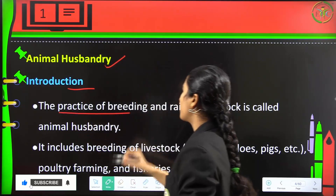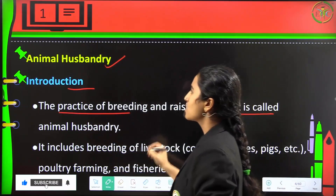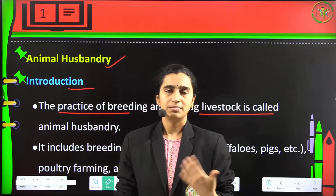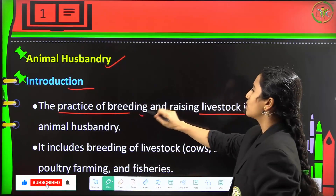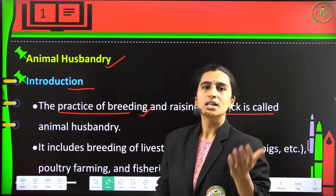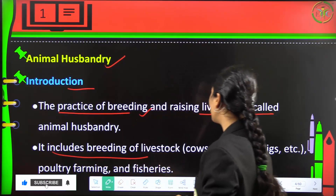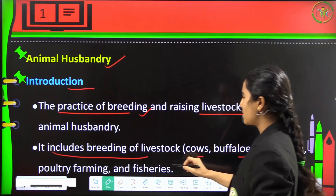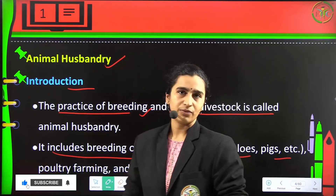Animal husbandry is the practice of breeding and raising livestock. It includes breeding of livestock such as cows, buffaloes, pigs, etc., as well as poultry farming and fisheries.